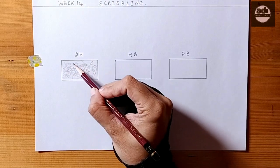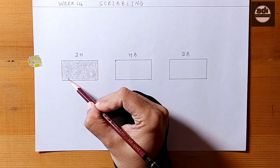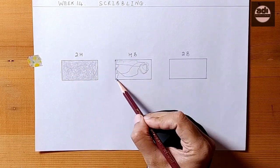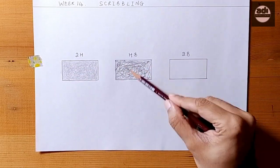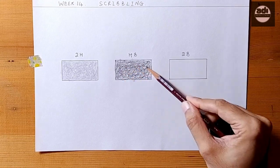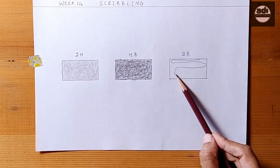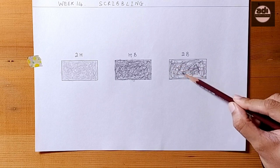For your assignment, you will shade one rectangle every day using the scribbling technique. You want to get a rectangle with even tone. Keep the scribbles going in different directions. Also try to get different tones on different days and use different pencil grades.